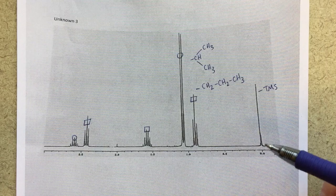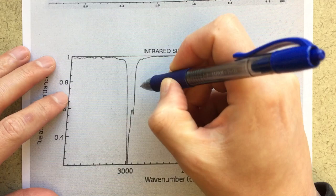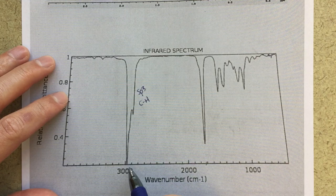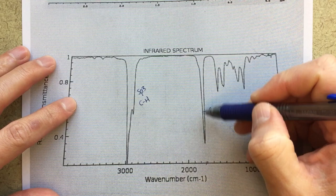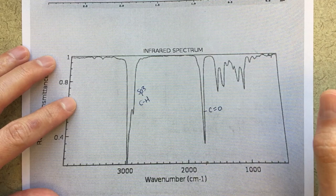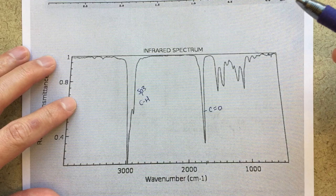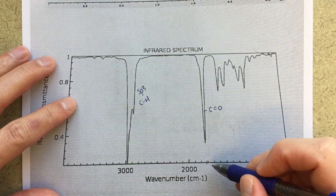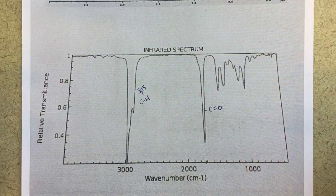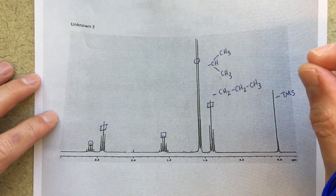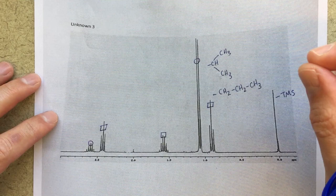Now let's move to the IR spectrum to put this all together. The first thing that jumps out is SP3 hybridized C–H: the stretch is sharply cut off below 3000. Then there's a strong C=O stretch — it's not a sharp peak, it's a bit wider — coming in at about 1710 wavenumbers. That's pretty indicative of a ketone. So from the IR we're getting a ketone carbonyl, and 1710 is right about where a ketone would appear.